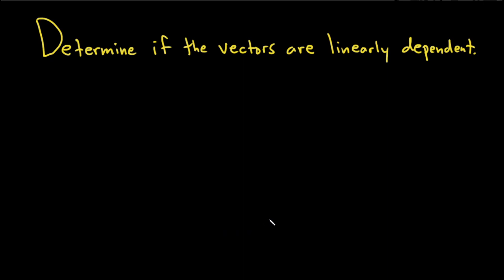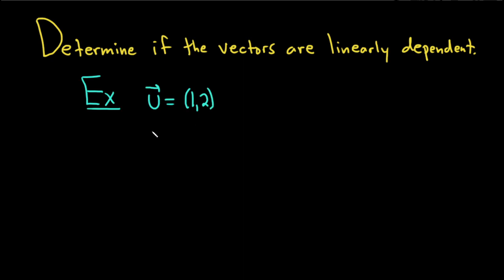In this problem we're going to determine if the vectors are linearly dependent. Let's do several examples. So let's look at the vector u, written as a row vector: 1, 2. And let's look at the vector v, written as a row vector: 3, negative 5. We want to know if these two vectors are linearly dependent.